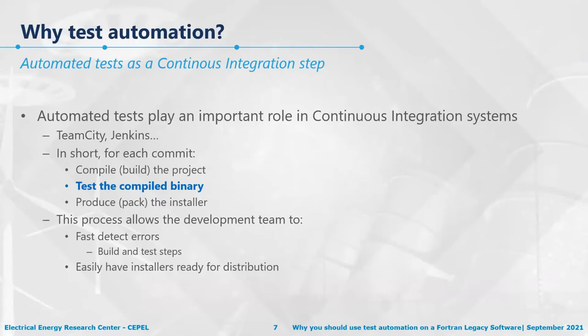Automated testing is also a really important component in continuous integration systems like Jenkins and TeamCity. These systems rely on a simple chain: you compile the project, test the compiled binary, and then produce or package the software. This process is very useful for development teams because you can quickly detect errors at the build or test steps, and you usually have installers ready for distribution.